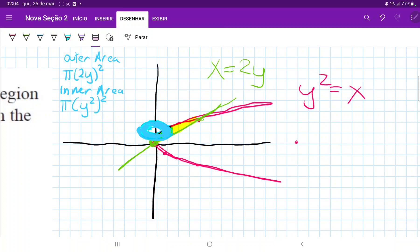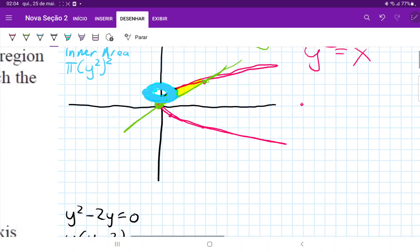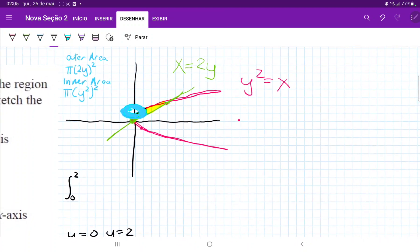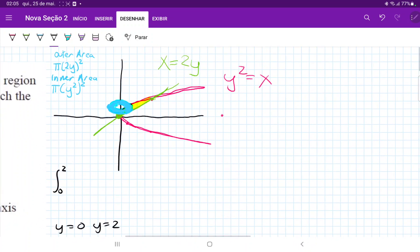So let's set up our integral. This is, when we move a little bit downwards, we're going to say that this is the integral from 0 to 2 of the outer area, which is pi times 2y squared, which is pi times 2y squared, minus the inner area.